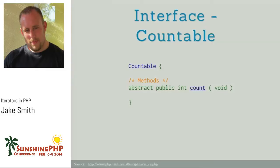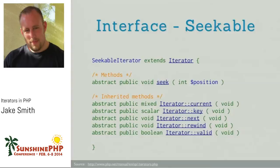Countable: if you want to use the PHP count() function, unless you actually implement Countable, you can't do that — you'd have to use a special function called iterator_count(). If you implement Countable, you can return what the count is for the collection you're working with. SeekableIterator is also important: this interface allows you to send it a key and say, take me to this specific element in this iterator.